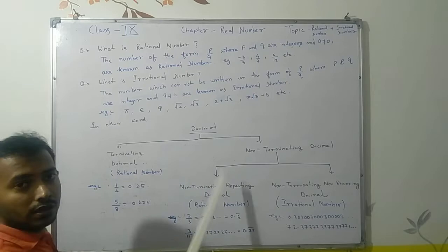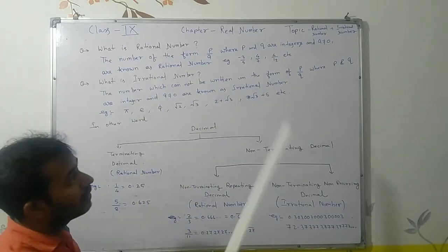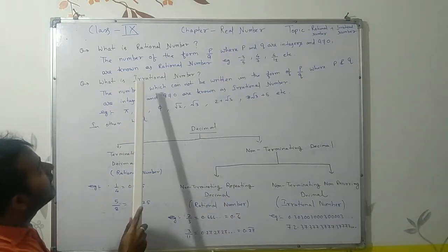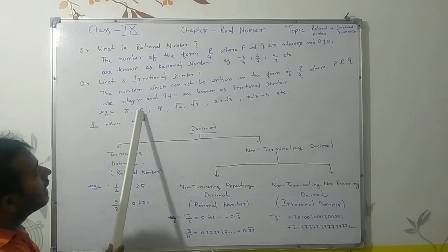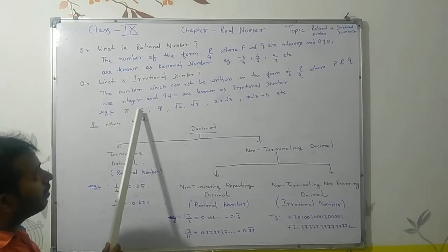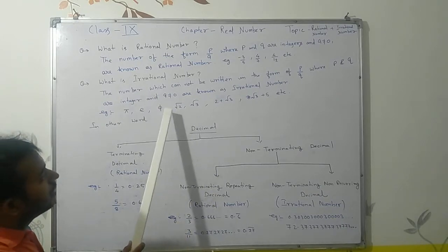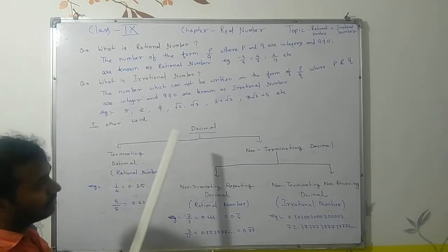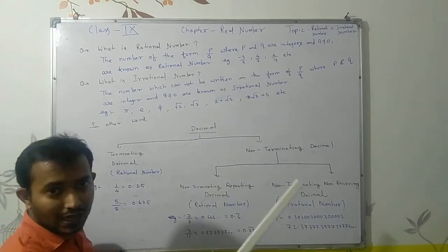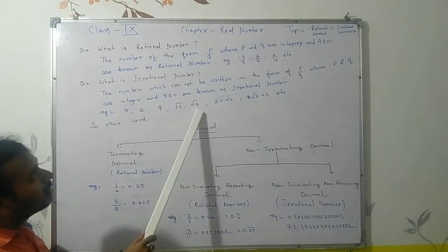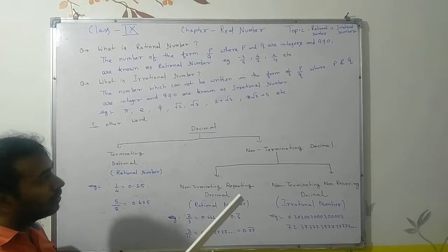4/12 is also a rational number. A number which cannot be written in the form p by q is called an irrational number. For example, pi, e (called Euler's number), the golden ratio (which you will learn in higher classes), √2, √3, 2 + √3, 7√3 + 5, etc. These types of numbers are called irrational numbers.